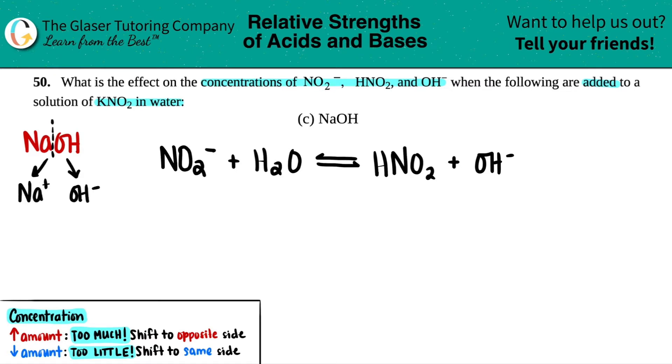And hopefully one of these two will be in our balanced equation. And in this case, the OH minus is in the equation. So if we are increasing NaOH, it trickles down.